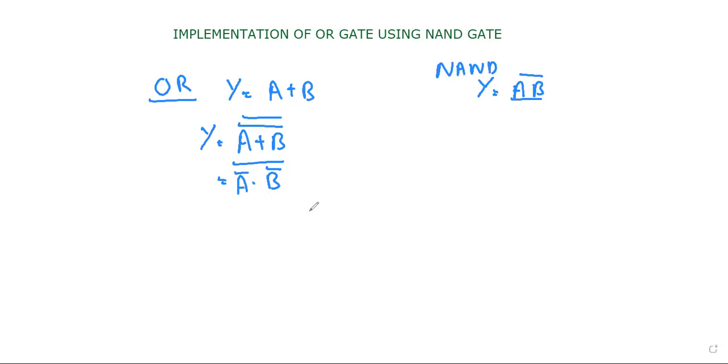So for getting a bar by using NAND gate, just short the input a, here it will be a bar. So for b bar, you can just short b inputs, here we will be getting b bar.